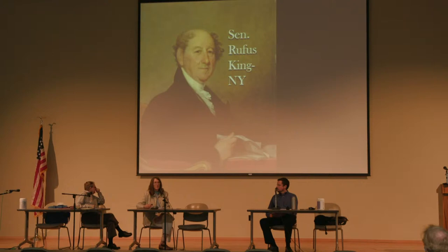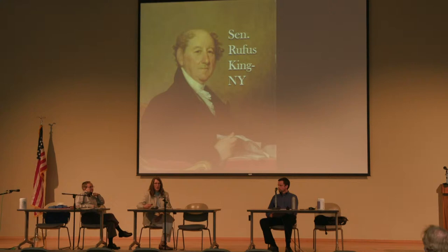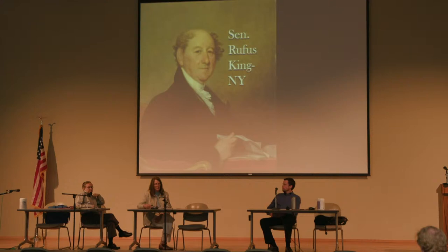Rufus King of New York is really the largest voice. He was one of the few founders still left in government — a senator from New York who had signed the Constitution. He had two things at work: he didn't want to see slavery expanded, making him a restrictionist, but he also resented the fact that the South had an unfair advantage in Congress through the three-fifths clause. The South's representation was skewed because they could count a portion of their slave population to have more representatives.